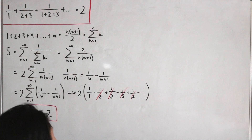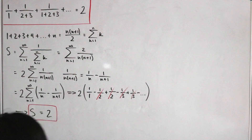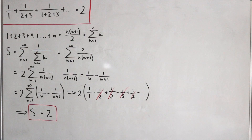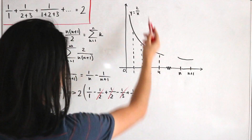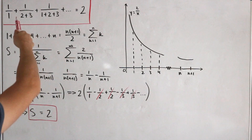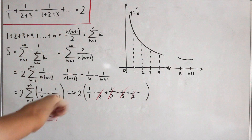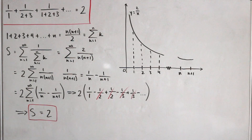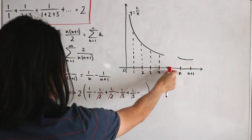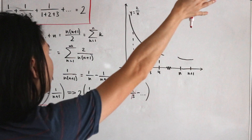That takes care of the first proof — the analytical method. Now I'll show you the visual method. This requires a graph, so give me one second to sketch it. To verify the summation equals two with a visual proof, we're going to use the function y equals two over x.